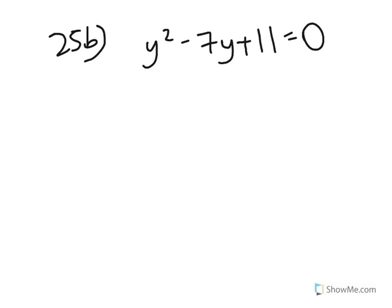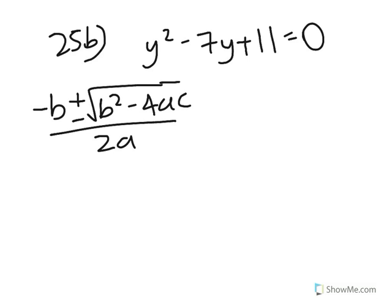Next, you're asked to solve x squared minus 7x plus 11 equals 0. You can't solve this using simple factorization. You have to use the quadratic formula: negative b plus or minus square root of b squared minus 4ac, all over 2a.